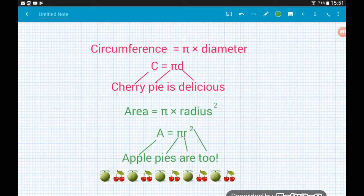For the area, area is equal to pi times the radius squared, A equals pi r squared. Apple pies are two!